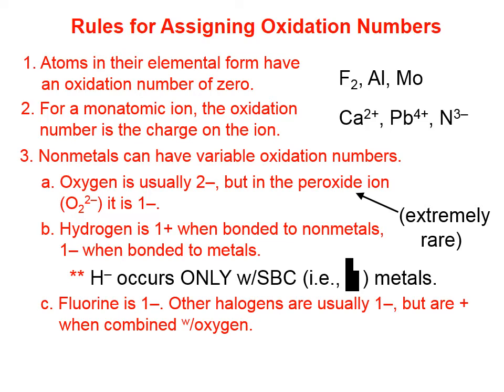You can take that to the bank — the oxidation number of fluorine is always 1−. The other halogens are usually 1−, but they are positive when combined with oxygen. For example, in the bromite ion, what is the oxidation number on the bromine? Each oxygen has a 2− oxidation number, and there are two oxygens, giving a total of 4−.